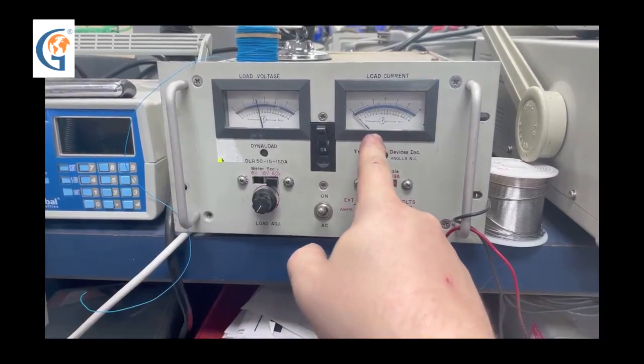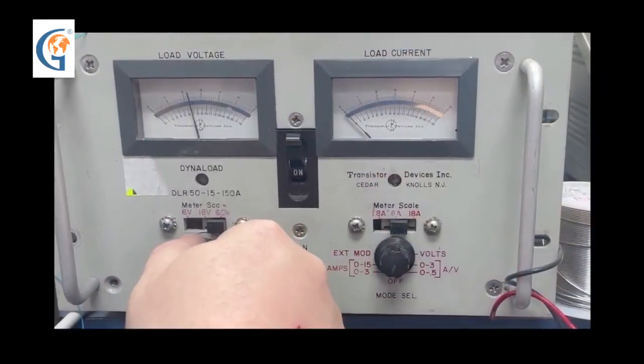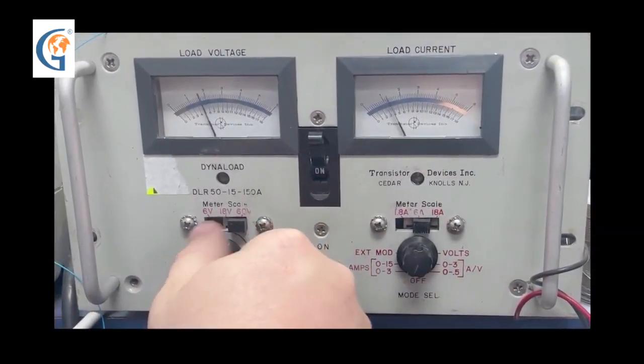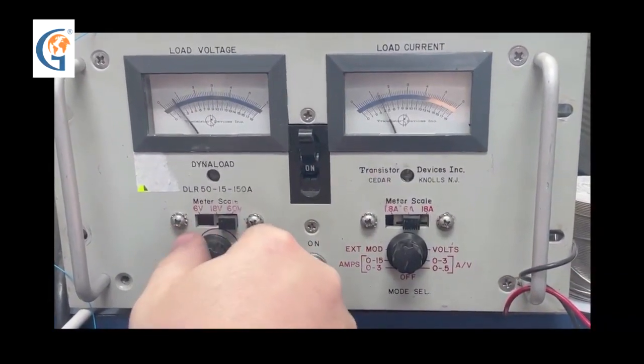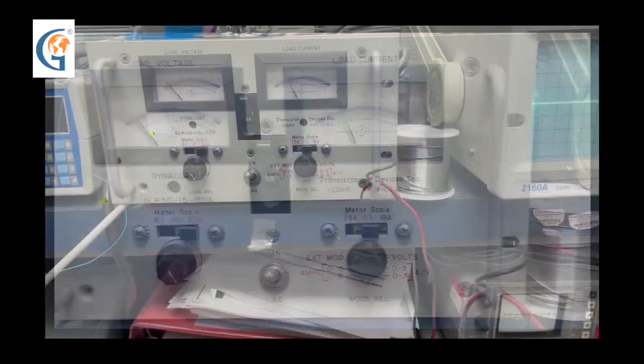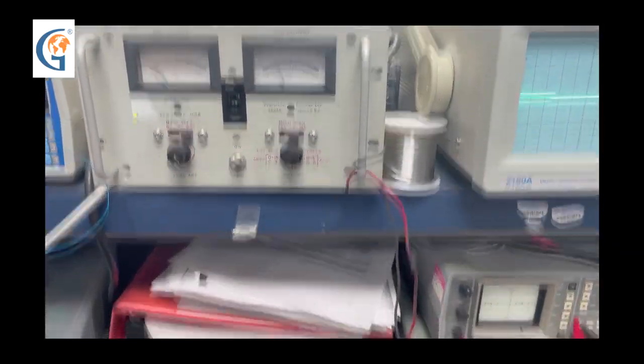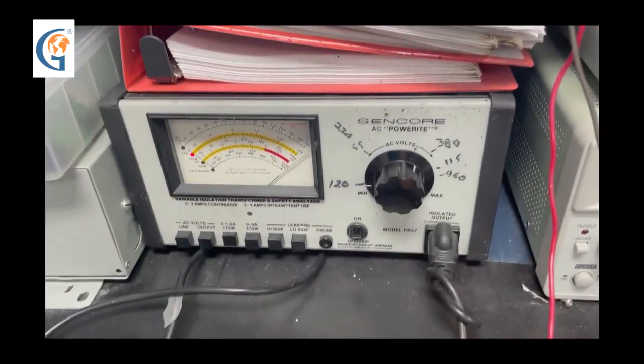Now, we'll apply the load at 5 amps. With the full load applied, we are no longer getting our output. Since we already changed the caps, we suspect a problem in the PWM circuit.